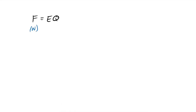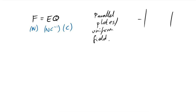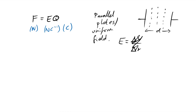For a parallel plate capacitor (uniform electric field), field strength E = V/d, where V is the PD across the plates and d is their separation. This comes from E being the potential gradient, and since the potential changes uniformly between the plates, E = ΔV/Δr = V/d. The force on a charge in a field is F = qE (newtons = newtons per coulomb × coulombs).